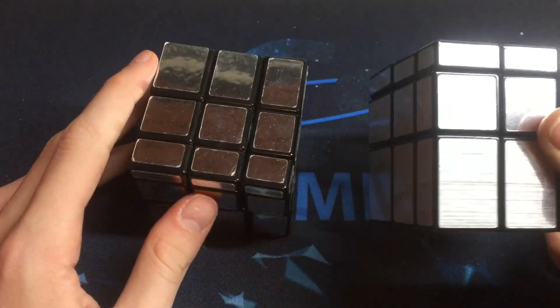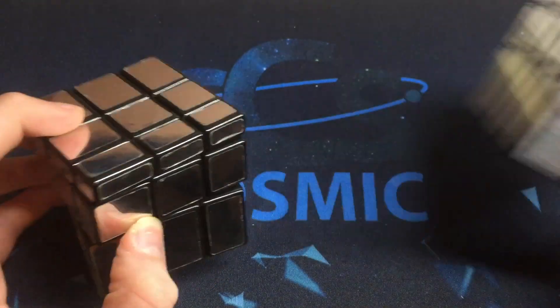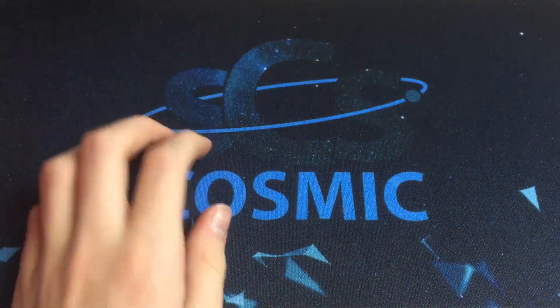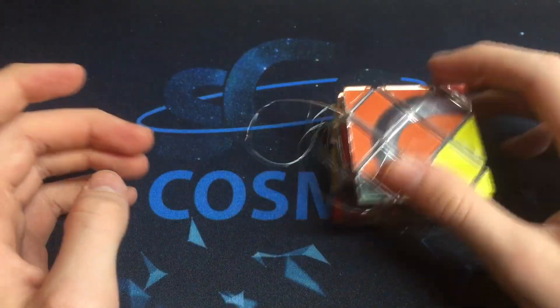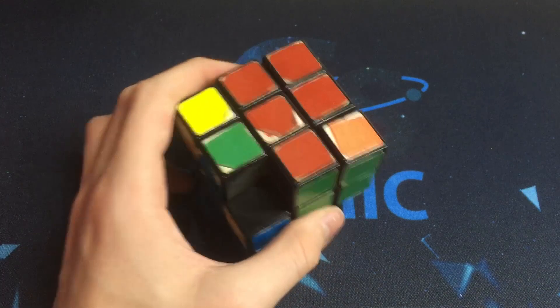I have two mirror blocks. This is a Shengshou and this is a Rubik's mirror blocks. Broken Rubik's Magic which all its strings just came out.